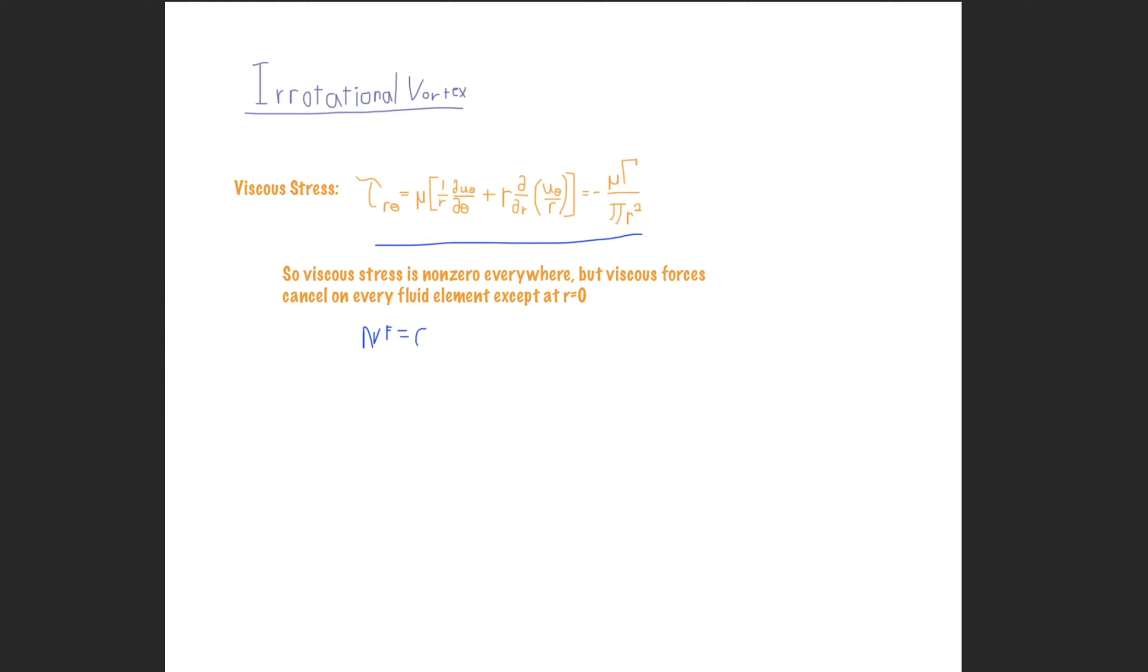Anyway, right? So what that means is that our Cauchy equation of momentum again simplifies down to the Euler equation.